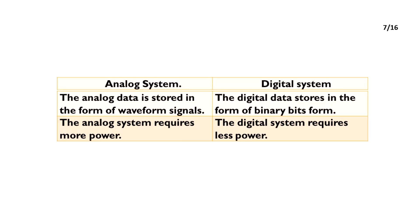The analog data is stored in the form of waveform signals. The digital data is stored in the form of binary bits. The analog system requires more power. The digital system requires less power.